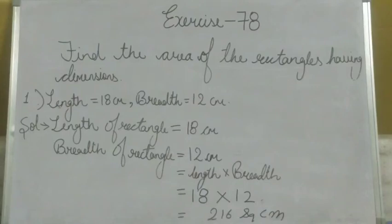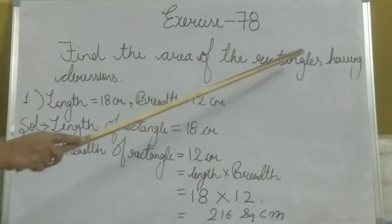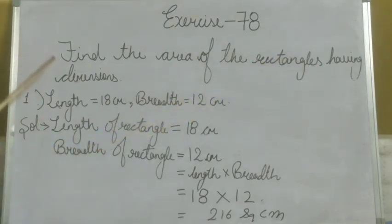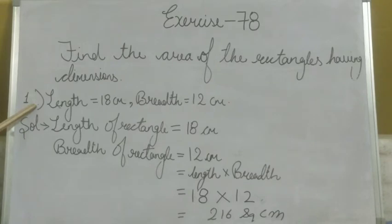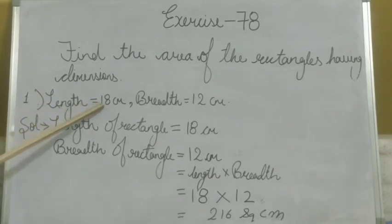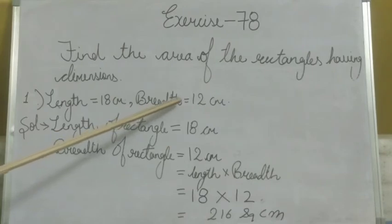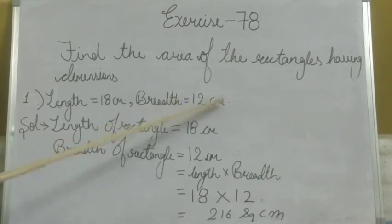Let's start Exercise 78. Find the area of the rectangle having the given dimensions. In question number 1, the length is equal to 18 cm and breadth is equal to 12 cm. Now we solve this question.